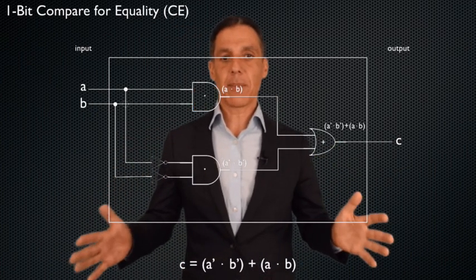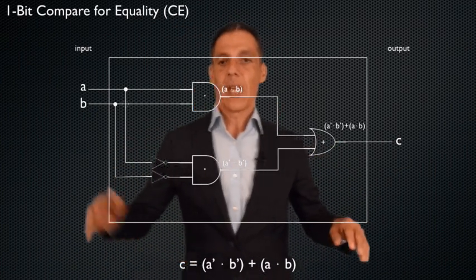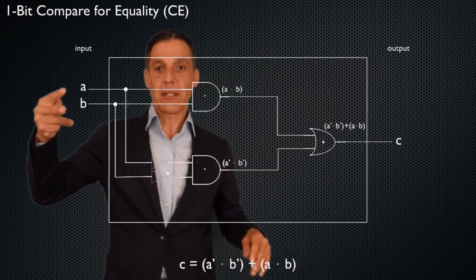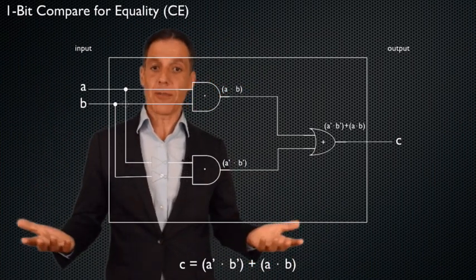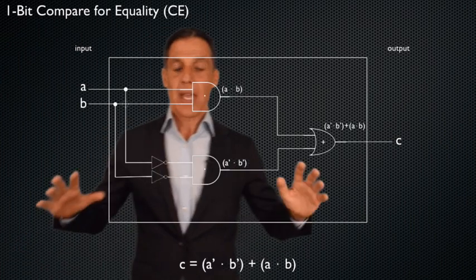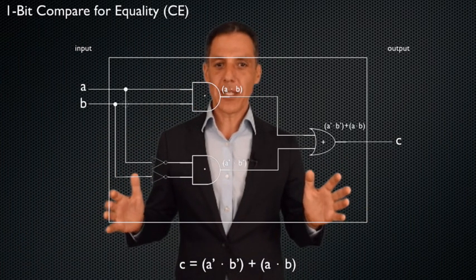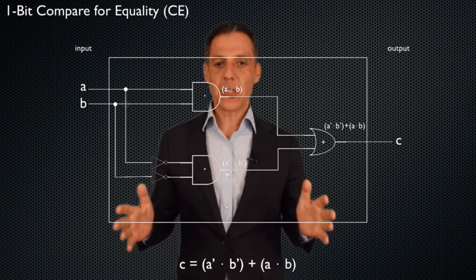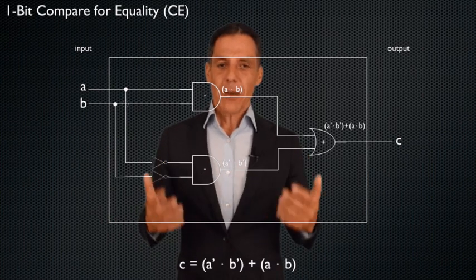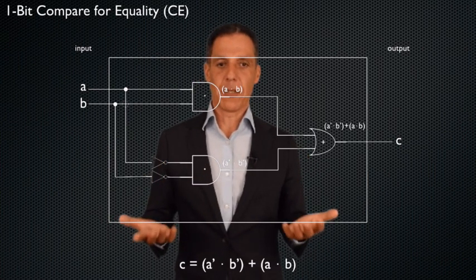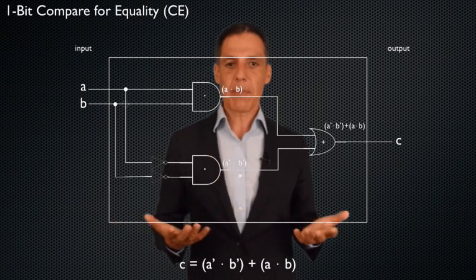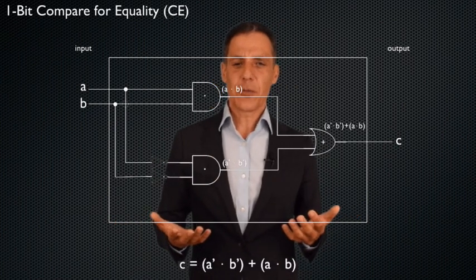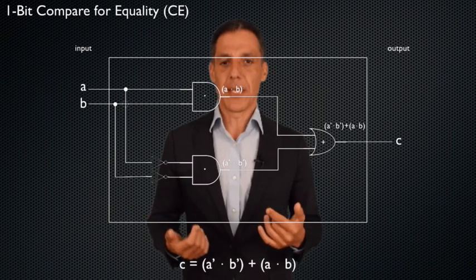And now we have our first meaningful computation. It's incredibly simple. It is simply a one-bit compare for equality. But it's meaningful. It actually does something. Okay? And notice here, in some ways, there's something I always think magical about these, designing these circuits, because notice that you're not really computing one-bit compare for equality.